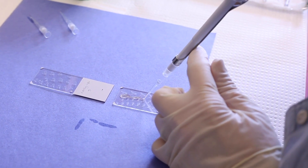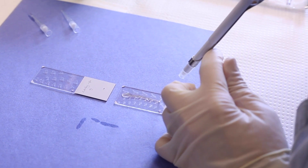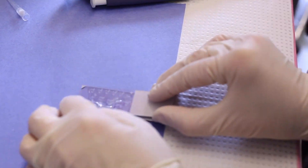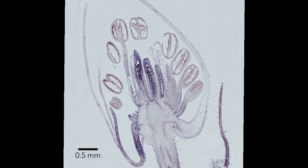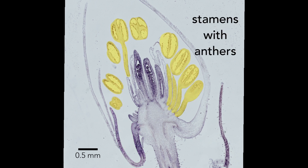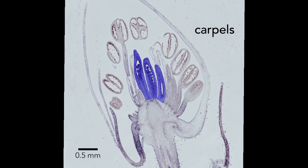The in-situ hybridization will turn the flower bud purple only where my gene is being expressed. So this is a flower bud after the experiment is finished. You can see all the baby flower organs — sepals, a petal starting to make a spur, stamens with anthers full of pollen, and carpals. We can see that the spur is purple, which means my gene is being expressed in the petal.